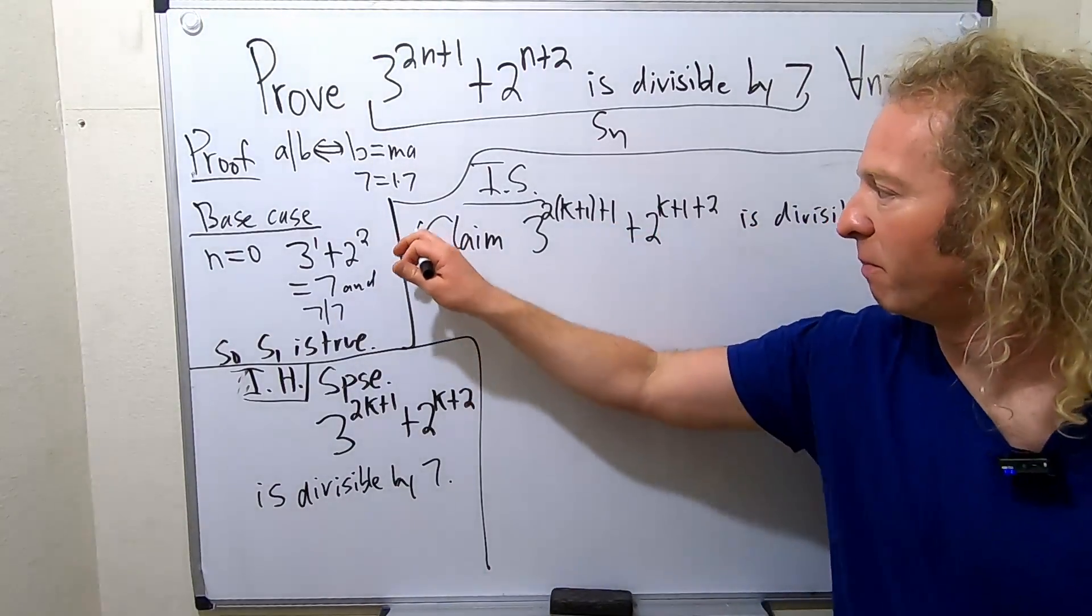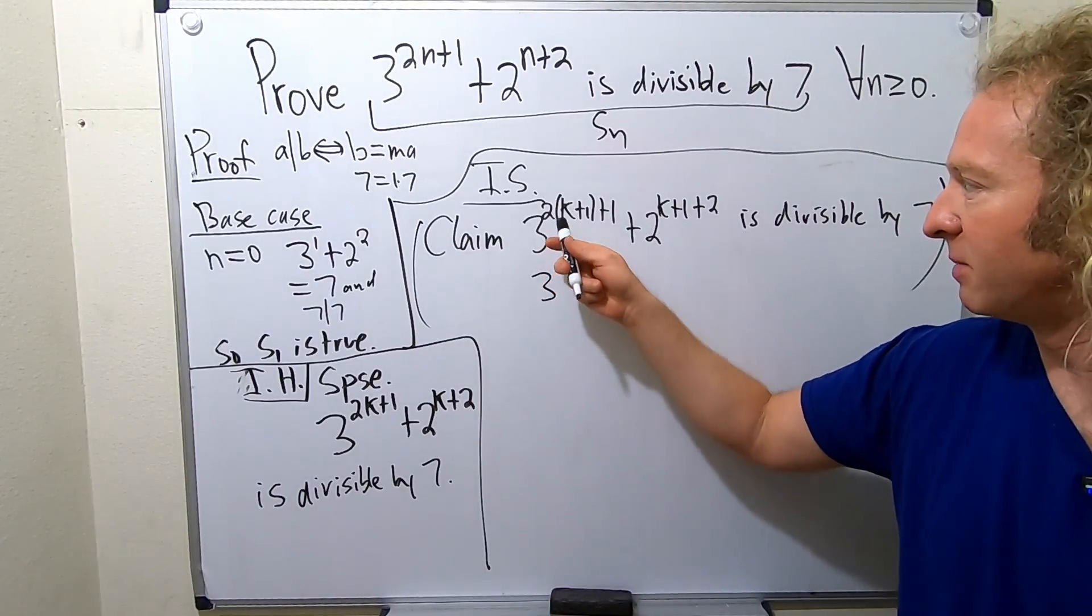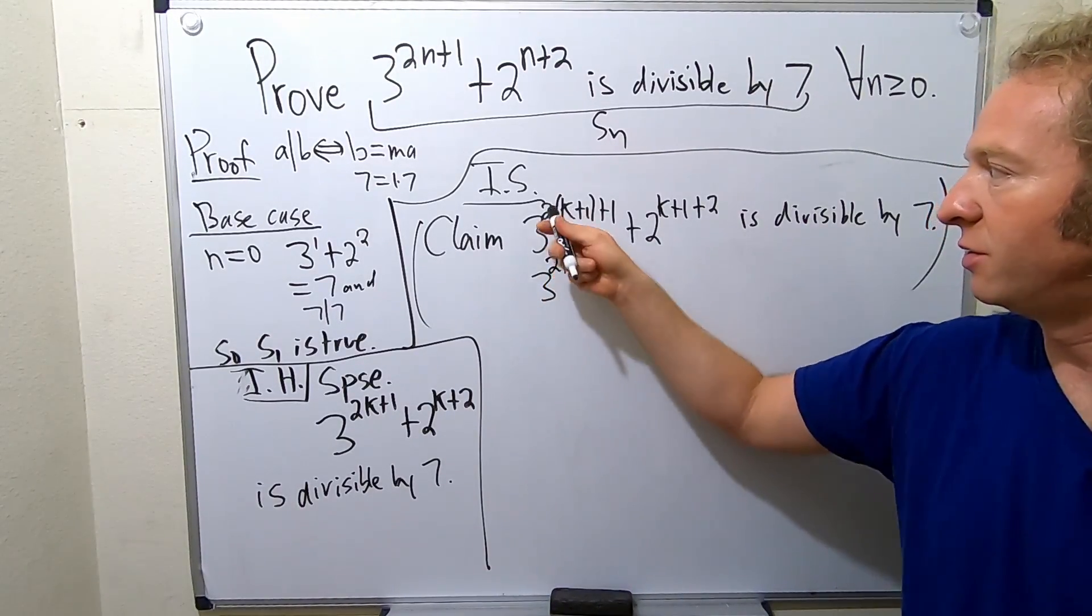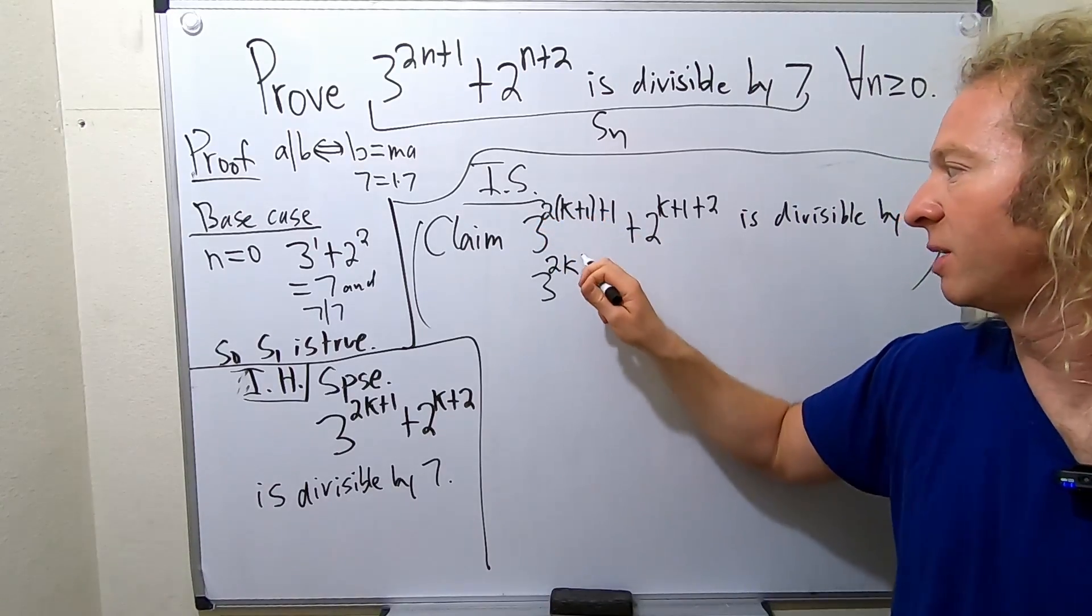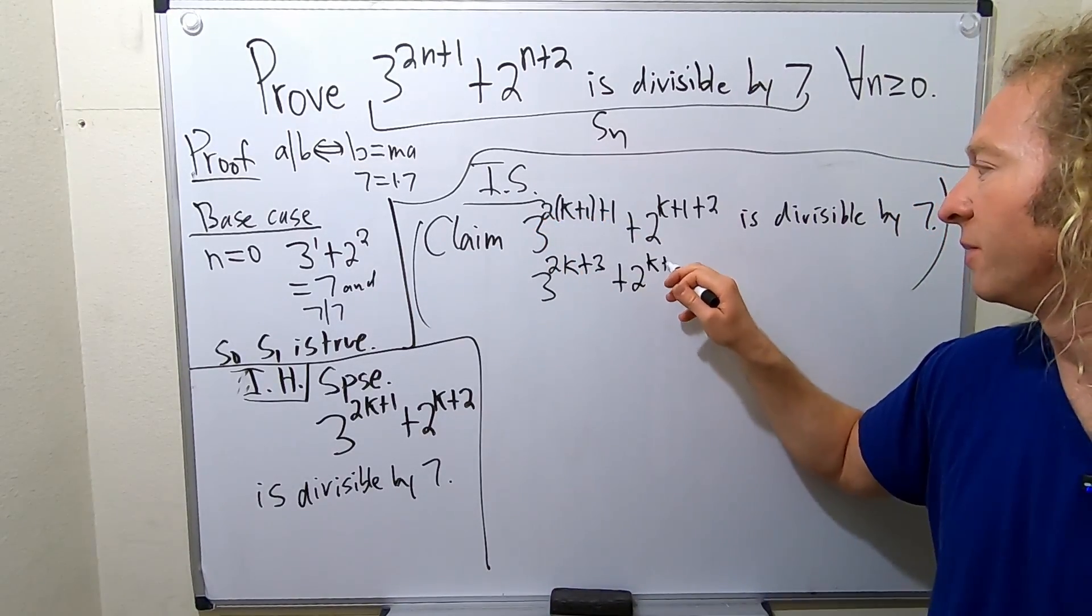So I'm going to rewrite this just for my own benefit. This is the same as 3, let's skip some steps here. This is 2k and then 2 times 1 is 2 plus 1 is 3. So 2k plus 3 plus 2k, k plus 3. That's what we have.